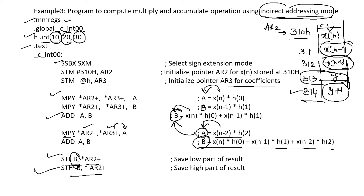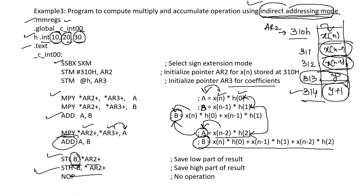We have computed: x(n)·h(0), x(n-1)·h(1), x(n-2)·h(2), and added these multiplications using addition operations with indirect addressing mode. We introduce some delay with NOP and end the code using .end.